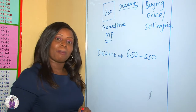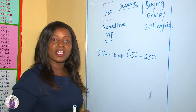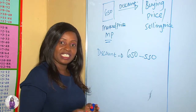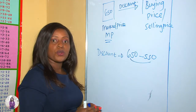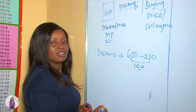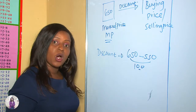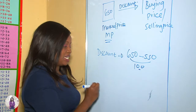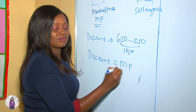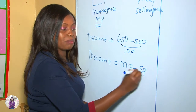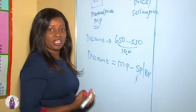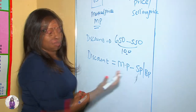Most business people give discounts to customers as a way of attracting them to buy. They want to make huge sales or change their stock, so you buy the item for 100 less. This brings us to the formula for calculating discount: discount is equal to marked price minus selling price or buying price, depending on what you are given.